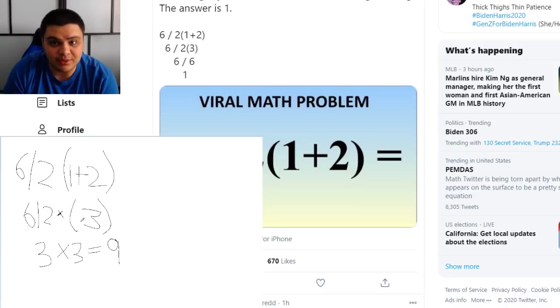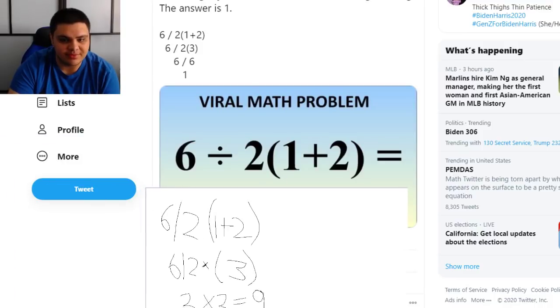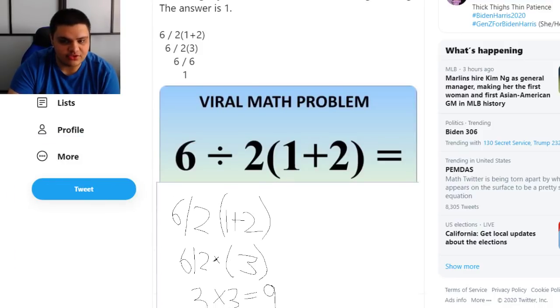What it is, is you go left to right. Once you get rid of P and E, which is parentheses and exponents. So hopefully that puts a lid on it and explains it for you. That is the answer to this viral math problem: 6 ÷ 2(1 + 2).